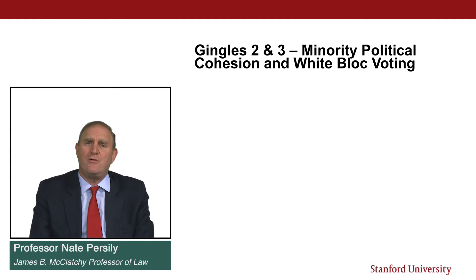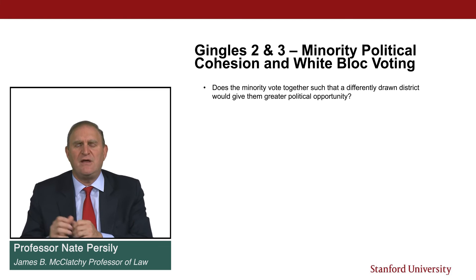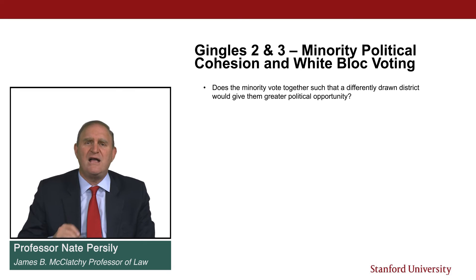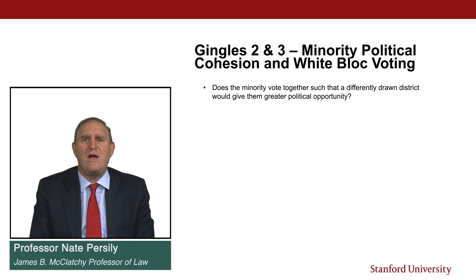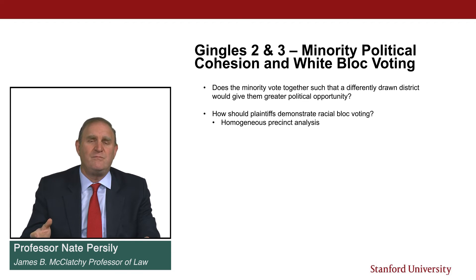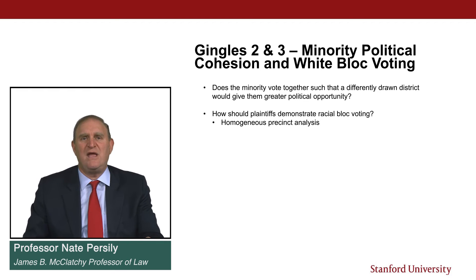How do you prove minority political cohesion or white bloc voting? The question is whether a minority community votes one way while the white community votes another, effectively canceling out minority votes. There are statistical methods called RPD analysis, racial polarized voting analysis, or racial bloc voting analysis. One approach is to look at homogeneous precincts: if precincts over 90% Black routinely vote for one set of candidates while precincts over 90% white vote for a different set, and this happens consistently, that generates an inference of racial polarization.